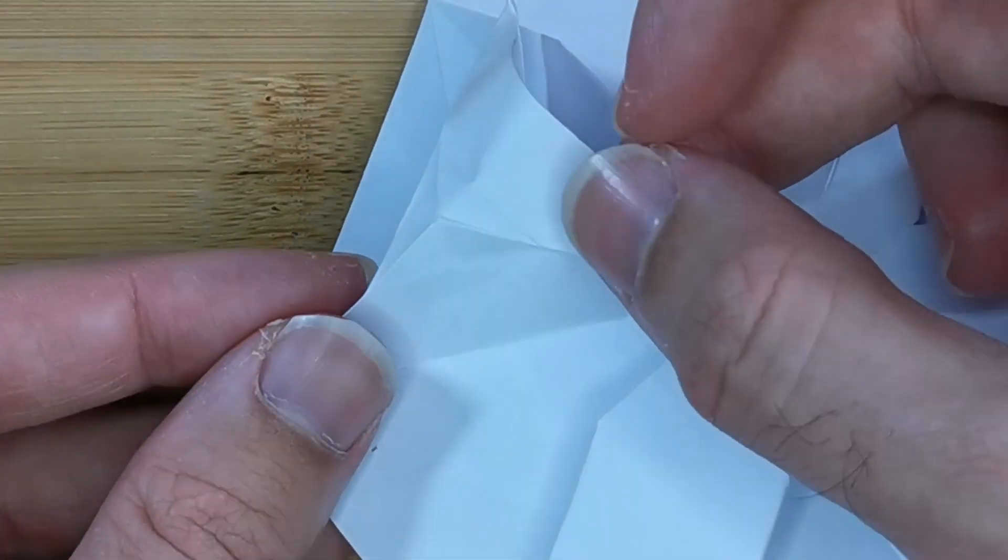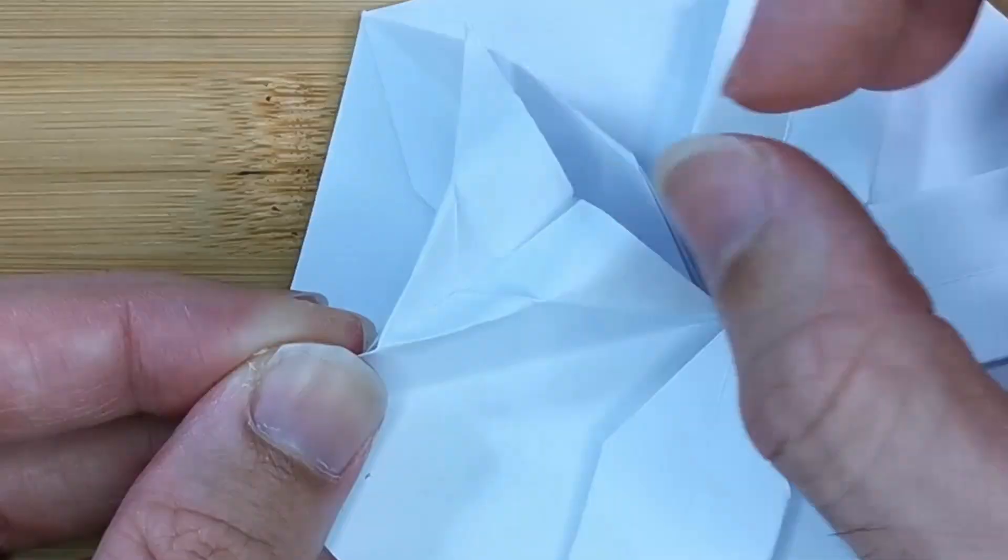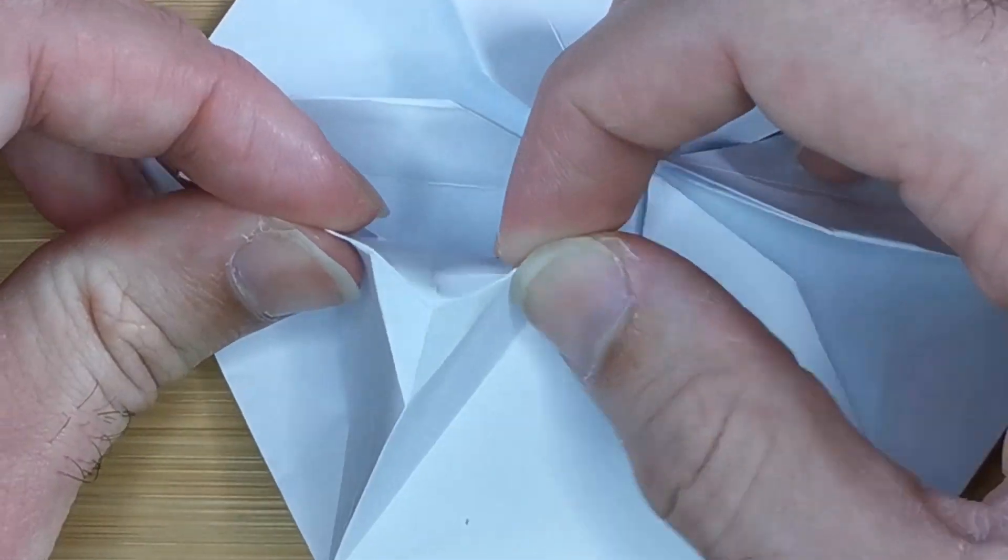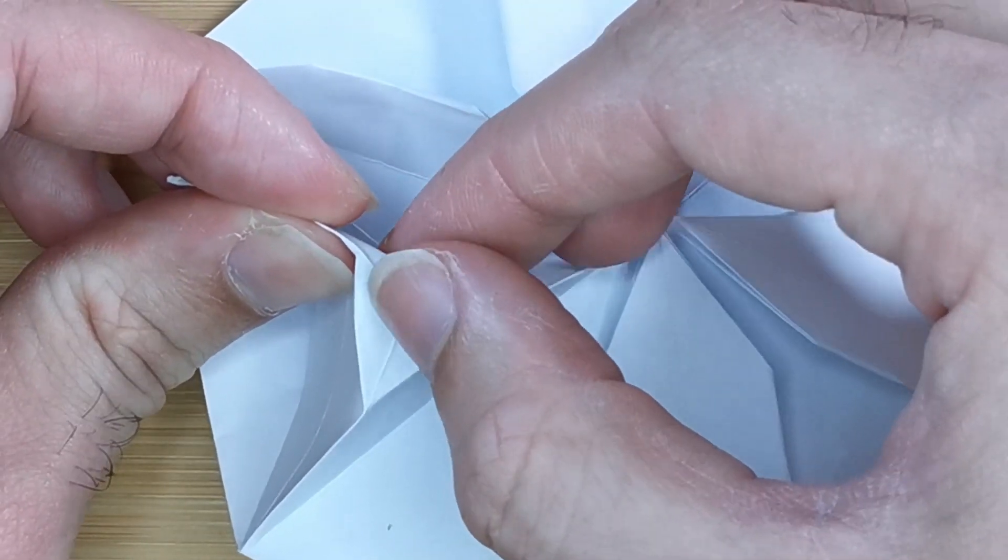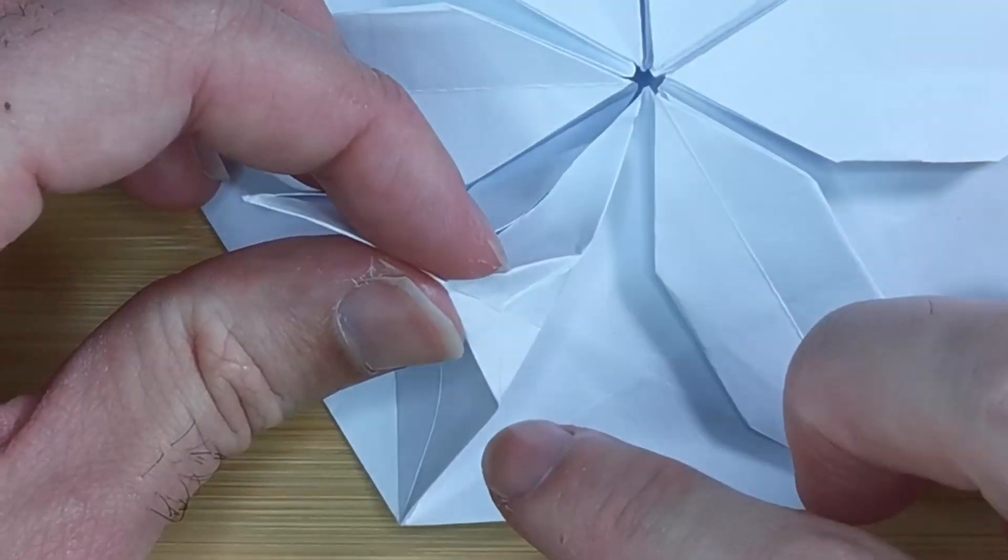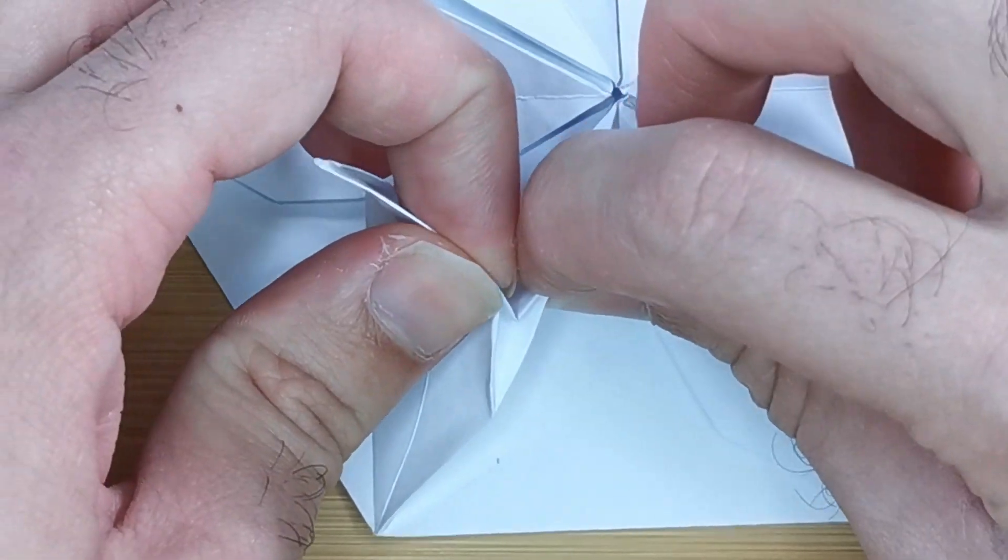And make all three creases of this triangle mountain folds and push like this to make an open sink.